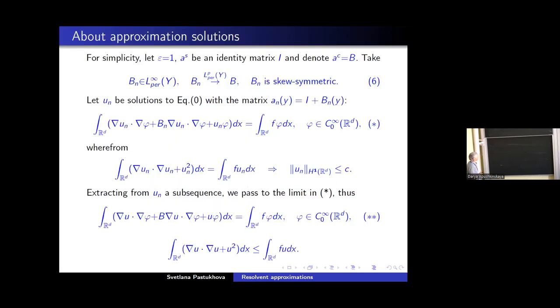But first of all, I comment what it means approximation solution. We take the sequence of bounded skew symmetric. First of all, for simplicity, for the time being, let ε equal to one and the identity matrix will be the symmetric part of the matrix A. And at this moment we take sequence of bounded skew symmetric matrix B_n converging in L^p to the skew symmetric part B. And as the matrix, the coefficient matrix with B_n will be bounded, we can solve the solution zero. It is understood in weak sense, so the following integral identity holds.